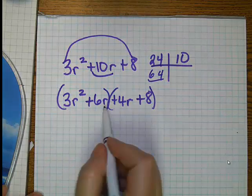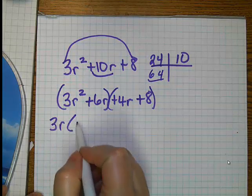What can you factor out of the first group? A 3r, leaving you with r plus 2.